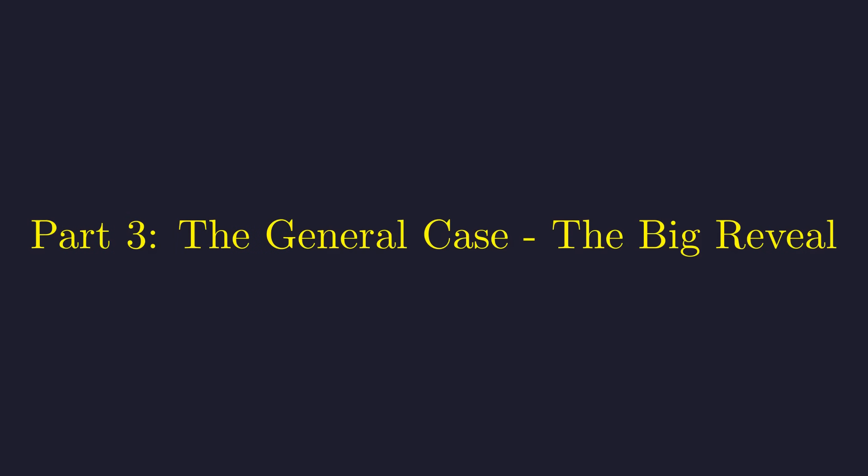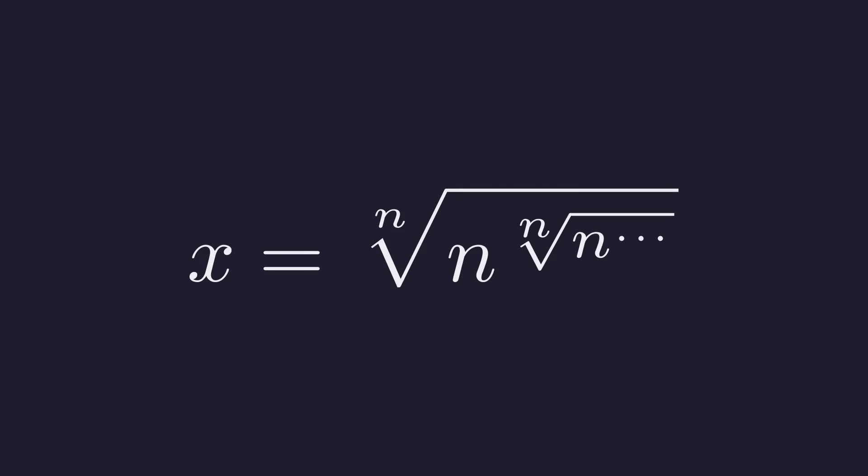Why does the integer solution work for 2 but fail for 3? Is there a general rule at play? Let's find out. Let's define a general expression where we use the nth root of the number n. Following the same procedure,